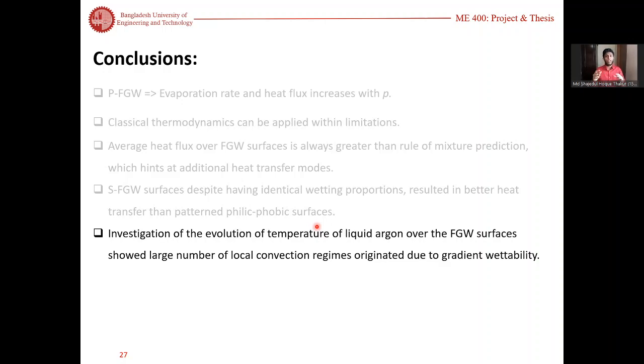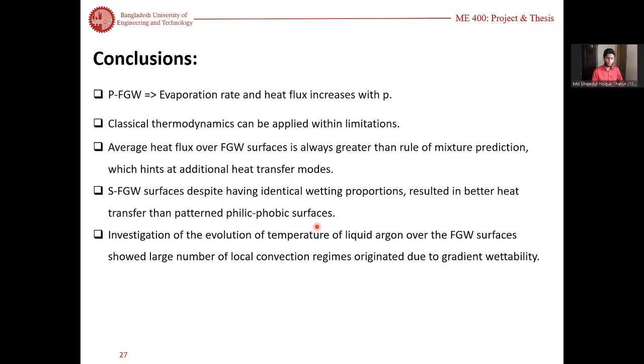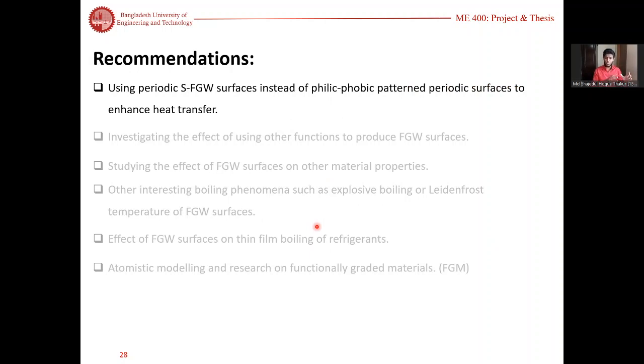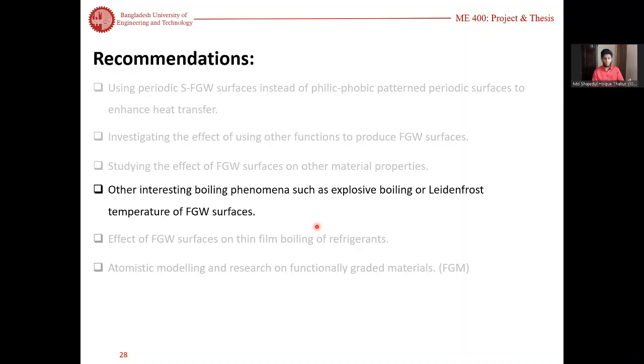We recommend using periodic sFGW surfaces instead of philic-phobic periodic surfaces will give better heat transfer. Future research works may investigate the effect of using other functions, calculating other material properties such as thermal conductivity and specific heat capacity on FGW surfaces. They can also investigate explosive boiling or Leidenfrost phenomena or thin film boiling of refrigerants such as water or R134a. Since we have also built a Nanohawk tool in addition to our thesis, people can use this tool to study atomistic modeling and research on functional graded materials using the same principle of functional graded variables. Thank you.